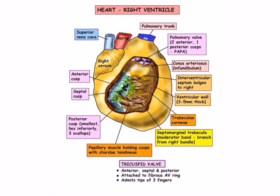The moderator band carries part of the right bundle branch and helps to speed up contraction of the right ventricle to match that on the left side. Blood leaves the right ventricle upwards through the smooth conus arteriosus, or infundibulum, passing through the pulmonary valve with its two anterior and one posterior cusps. A useful way of remembering this is by the word PAPA — P-A-P-A — standing for pulmonary, anterior, posterior, anterior, as a way of remembering the names of the cusps of the pulmonary valve.